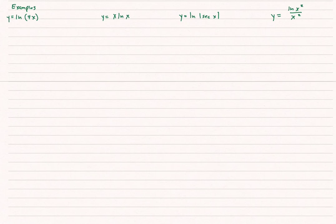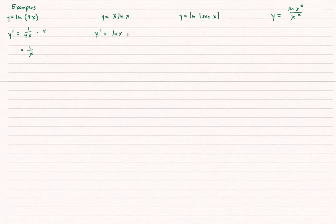Personally, I don't memorize the u'/u form — I stick with the second form and just use the chain rule. For our first example, the derivative of natural log of 4x equals 1 over 4x times the derivative of the inside, which is 4, giving 1 over x. For the second example, using the product rule: derivative of x times natural log of x equals 1 times natural log of x plus x times 1 over x, giving natural log of x plus 1.